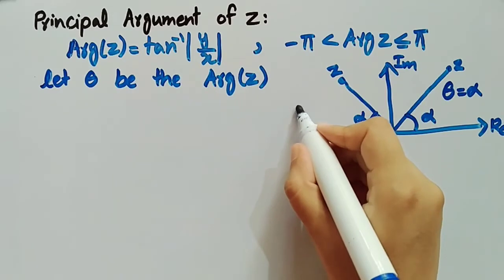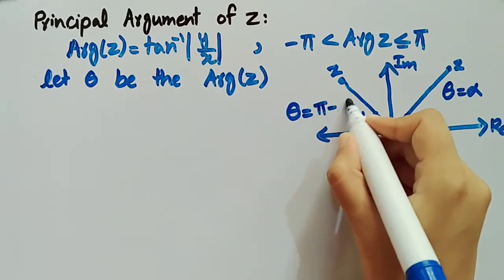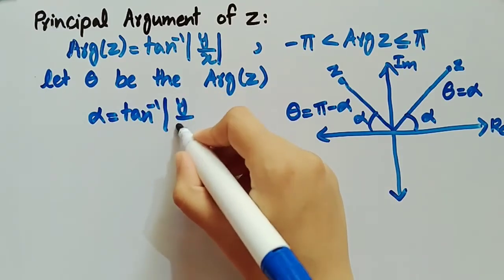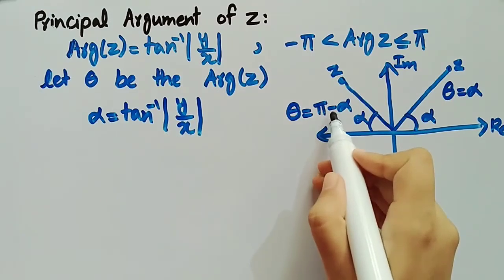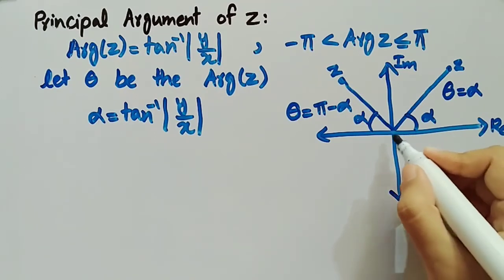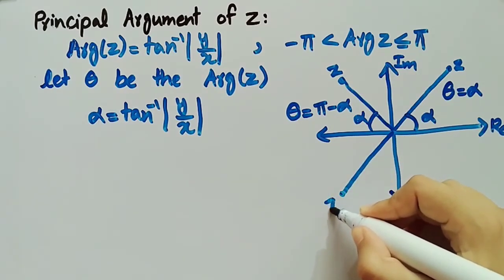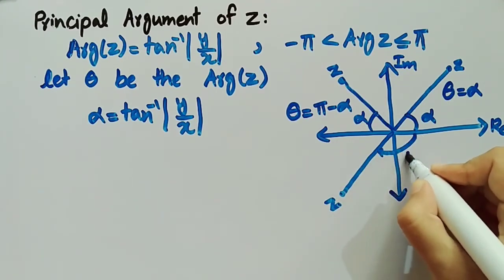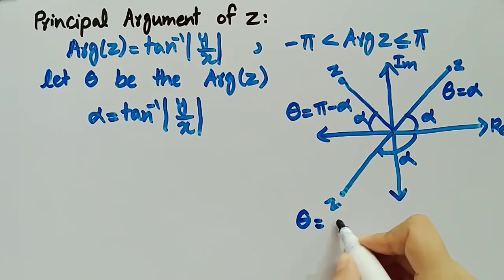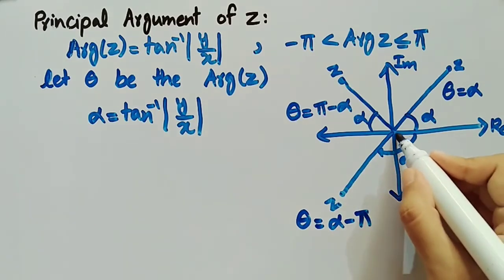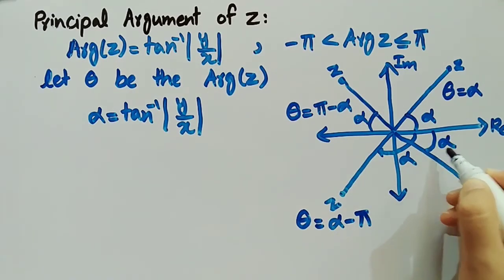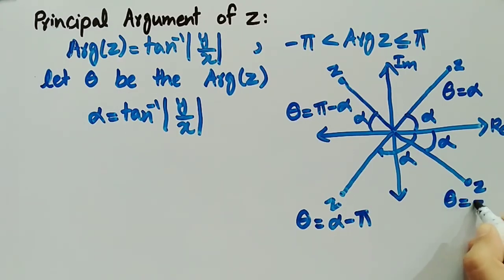If z is in the second quadrant, the principal argument θ equals π minus α, where α equals tan inverse of y by x. Subtracting this value from π gives the principal argument. If z is in the third quadrant and makes an angle α with the positive real axis, then θ equals α minus π. If z is in the fourth quadrant making an angle α with the real axis, then θ equals minus α.